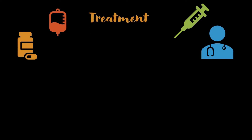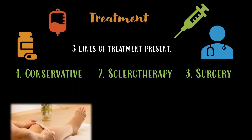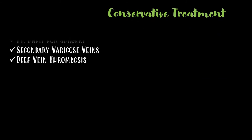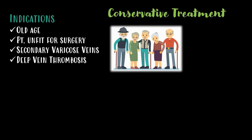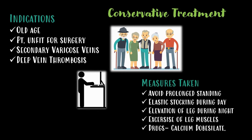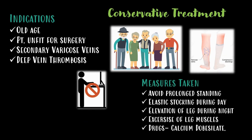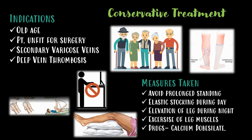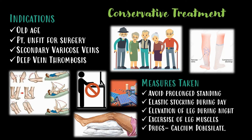There are three lines of treatment for varicose veins: conservative method, sclerotherapy, and surgery. Conservative treatment is indicated in elderly individuals, patients unfit for surgery, or those presenting with secondary varicose veins or deep vein thrombosis. The measures taken include avoiding prolonged standing, using elastic stockings during the day, elevation of the leg during night, exercise of leg muscles, and using drugs like calcium dobesilate.